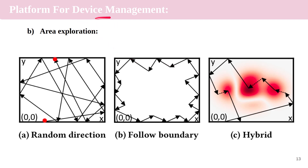The platform for device management includes area exploration. The authors considered three different area exploration strategies: random direction, boundary following, and a hybrid one. The random direction strategy shows the drone starting at one point and stopping at another, flying until it hits an obstacle like a wall, then randomly choosing another direction until no obstacle blocks the drone.